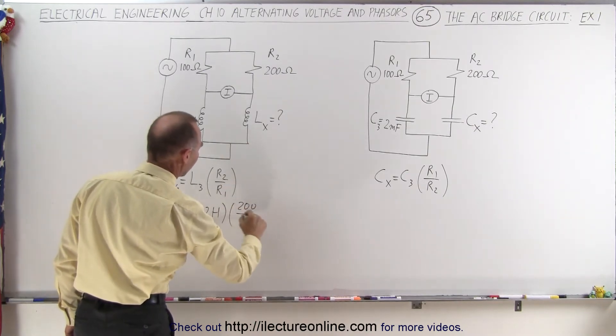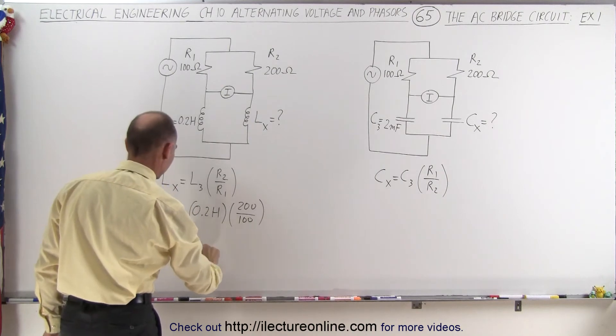which is 200 ohms, divided by 100 ohms. So in other words, L sub X is equal to double that, or 0.4 Henry's.